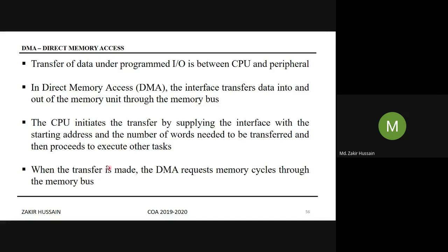The CPU initiates the transfer by supplying the interface with the starting address and the number of words needed to be transferred, and then proceeds to execute other tasks. This is step one of the DMA idea — how the CPU frees itself from the job of data transfer.